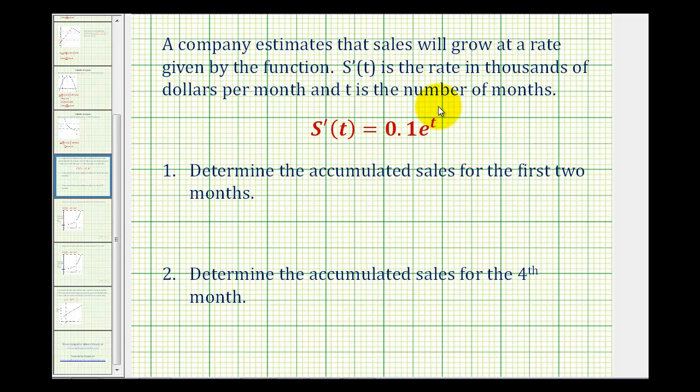A company estimates that sales will grow at a rate given by the function. S prime of t is the rate in thousands of dollars per month, and t is the number of months.